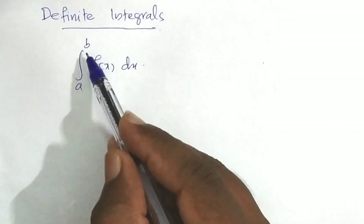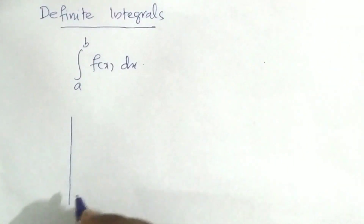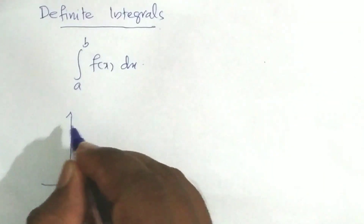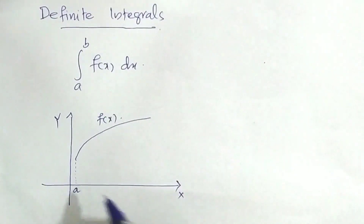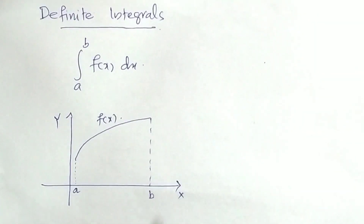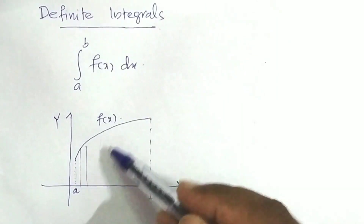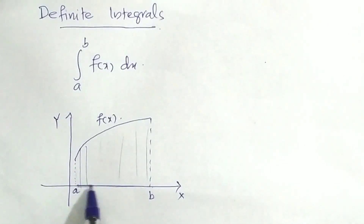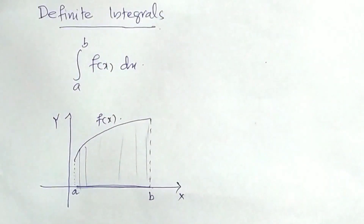The definite integral has a lower limit and an upper limit. The integral from a to b of f(x) dx — here f(x) is the function. This is the starting point A and this is the ending point B. The integral from a to b of f(x) dx gives the area under the curve, which we can calculate using definite integrals.